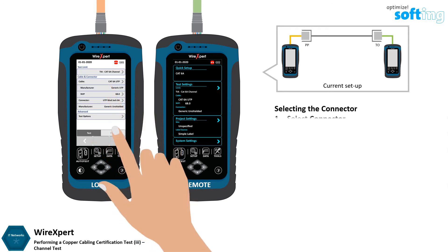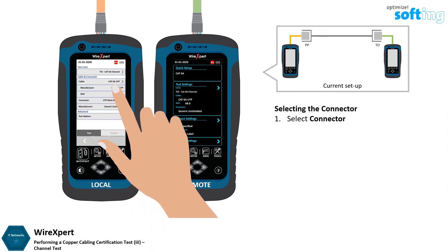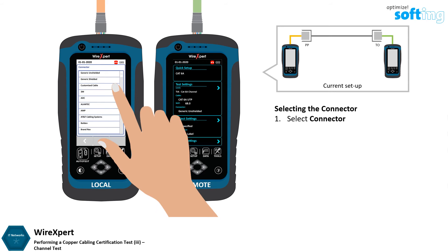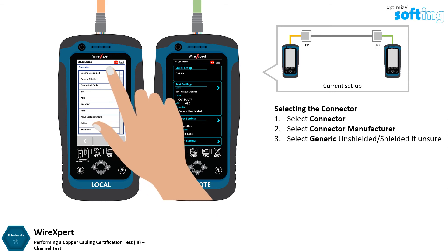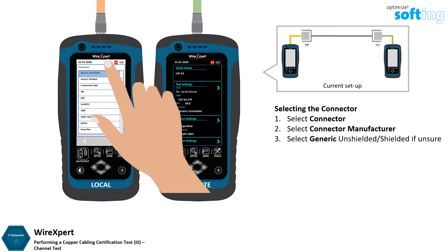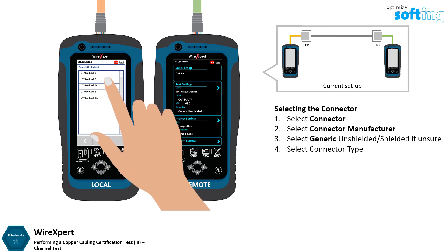Select connector. Select the connector manufacturer, or depending on connector construction type, select generic unshielded or generic shielded if unsure of the manufacturer. Then select the connector type.